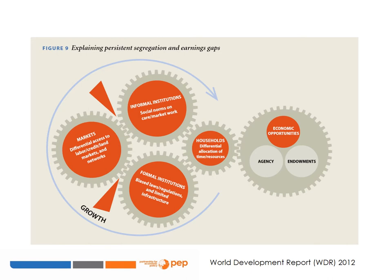This diagram from the World Development Report 2012 shows how women's economic opportunities may be limited because of constraints encountered within households themselves due to gender bias in the allocation of time and resources. They are encountered in informal institutions such as social norms about gender roles relating to care and market work. They are encountered in markets which provide differential access to factors of production. And they are encountered in formal institutions where biased laws and regulations compound the limited access that women already face, creating a gender gap in economic opportunities.